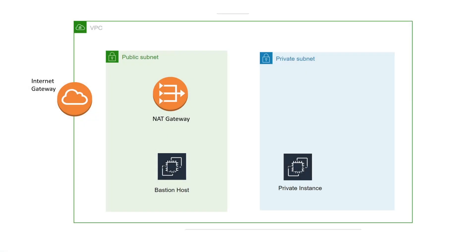So this is what we're going to set up today. We have a VPC with two subnets: a public subnet and a private subnet. In the private subnet we have a private instance which is not going to be reachable from the internet. In the public subnet we have a bastion host which is reachable from the internet, and also a NAT gateway which gives the private subnet instance access to the internet for updates and patches. We also have the internet gateway which gives internet access to the whole VPC. So let's go ahead and begin the setup.